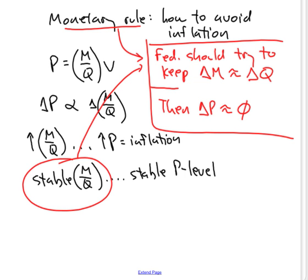If the rate of growth of M is equal to the rate of growth of Q approximately, then the rate of growth of P—inflation—will be roughly zero. And that, to a monetarist, is a very desirable goal.